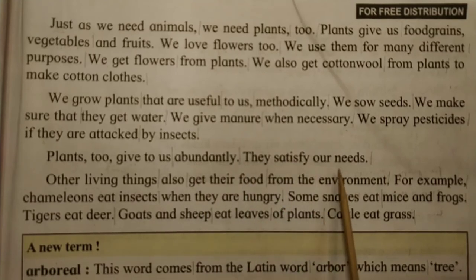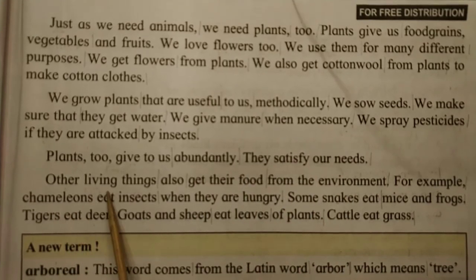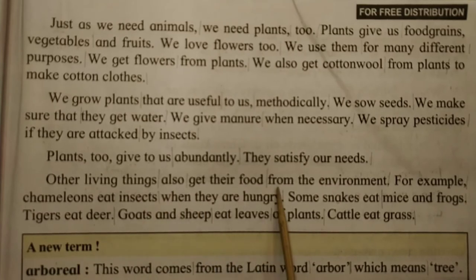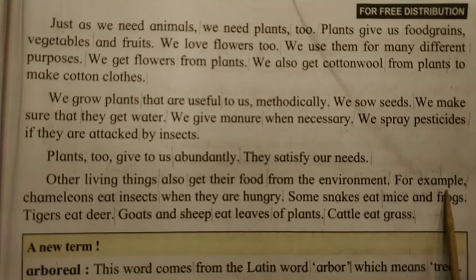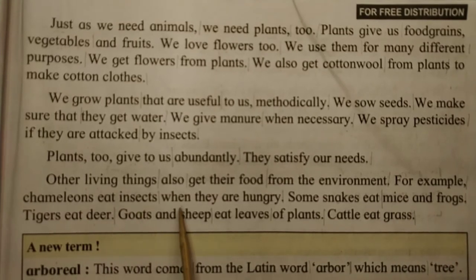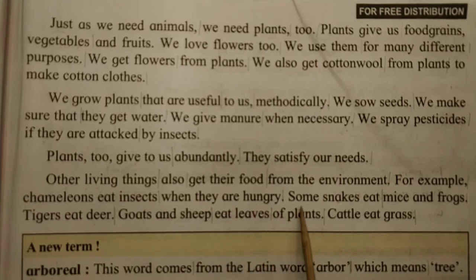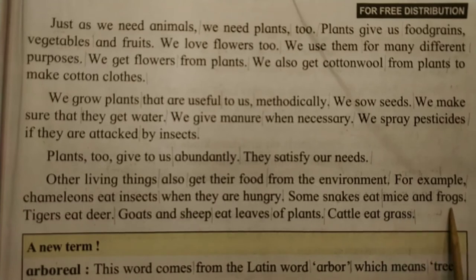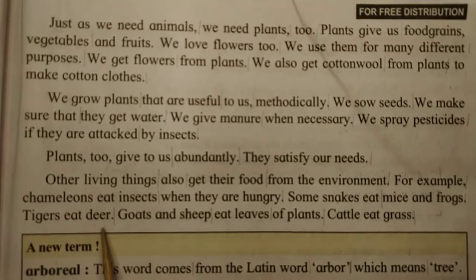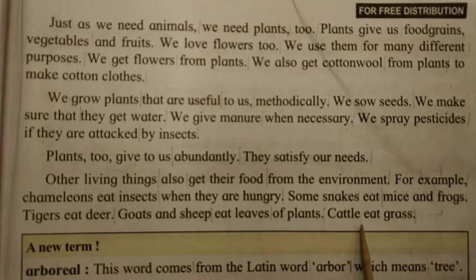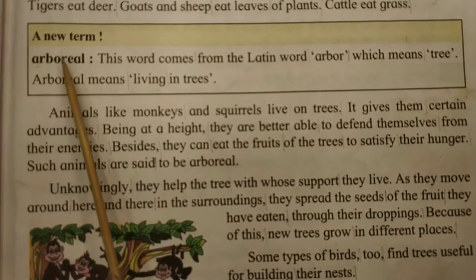Plants too satisfy our needs abundantly. Other living things also get their food from the environment. For example, chameleons eat insects when they are hungry. Some snakes eat mice and frogs. Tigers eat deer. Goats and sheep eat leaves of plants, and cattle eat grass.